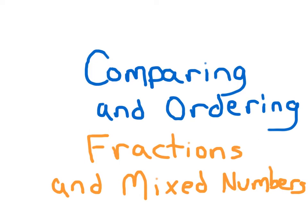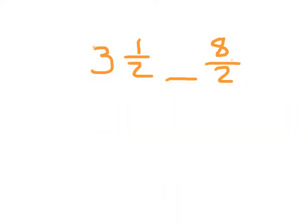Comparing and ordering fractions and mixed numbers. We might be asked to compare two of these. On the left-hand side, we have a mixed number, and we have an improper fraction on the right-hand side. What we want to do is make them so that they are the same thing — so that we are comparing the same things — both mixed numbers or both improper fractions.